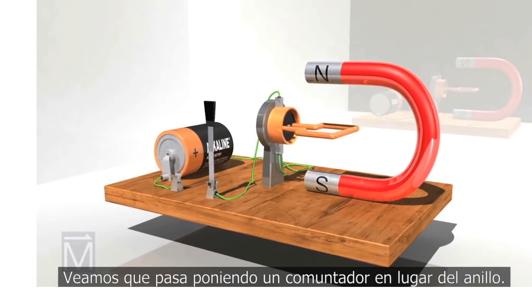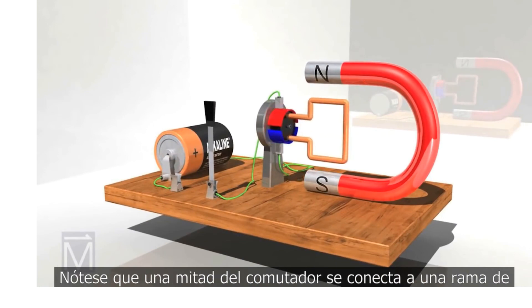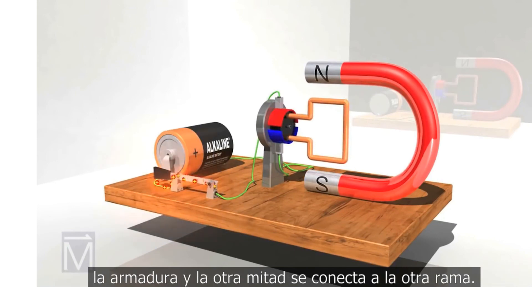Let's return the real commutator to its rightful place and see what happens now. Notice how one half of the commutator connects to one arm of the armature while the other half connects to the other arm.